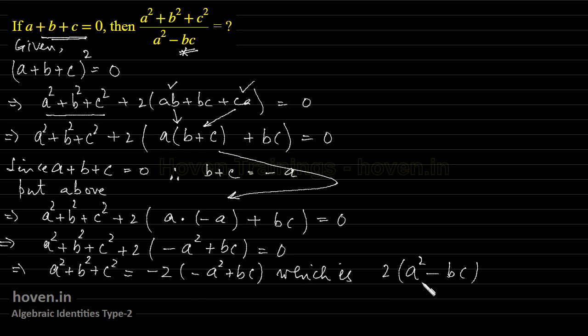Now we can bring this to the other side which implies a square plus b square plus c square by, this comes down, a square minus bc is equal to 2, this is the answer.